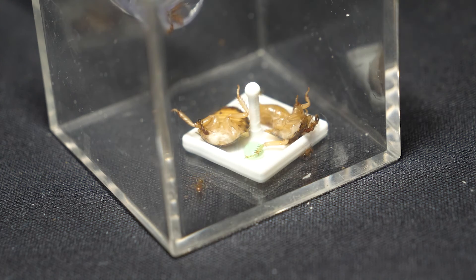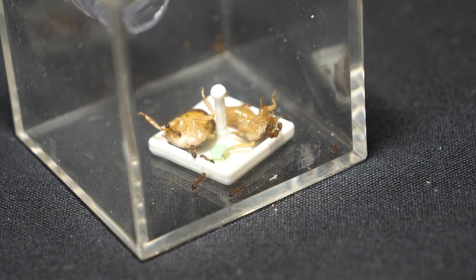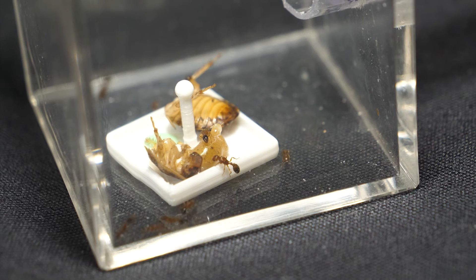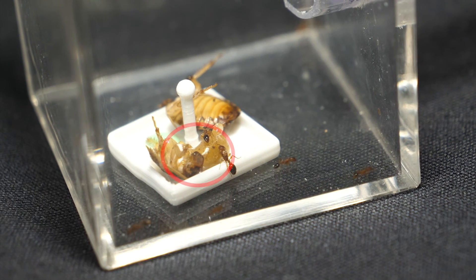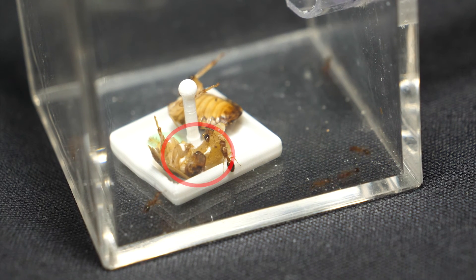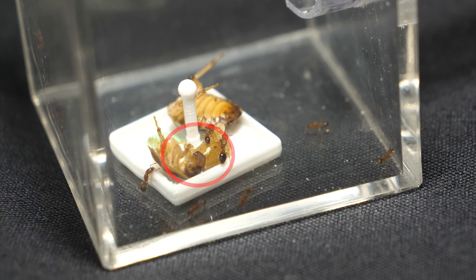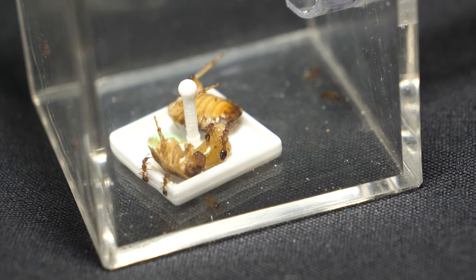Over the past few days, I've noticed that one of the queens doesn't stay in the nest and is usually in the outworld or water tube by herself. Although the ants haven't shown any aggression towards her, I have no idea why this is, so if you have any guesses please let me know.